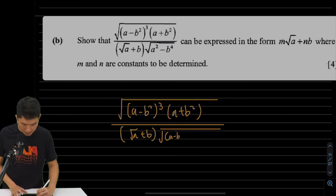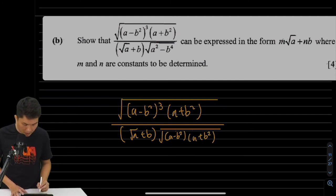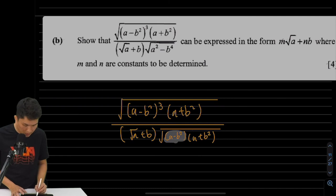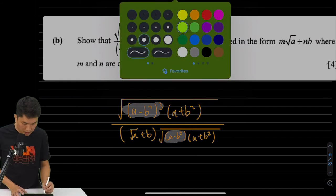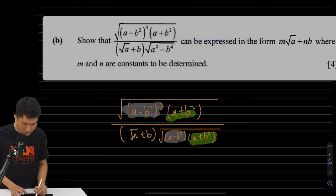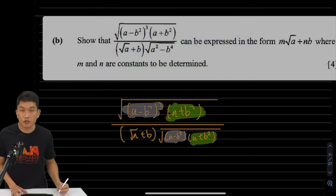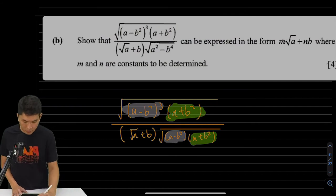A minus B square. A plus B square. I'm going to use a bit of color coding. You can see an A minus B square here. You can see an A minus B square raised to the power of 3 over here. And you can see A plus B square over here. A plus B square over here. And they're both under the square root. The white and the green ones. So we can cancel them.